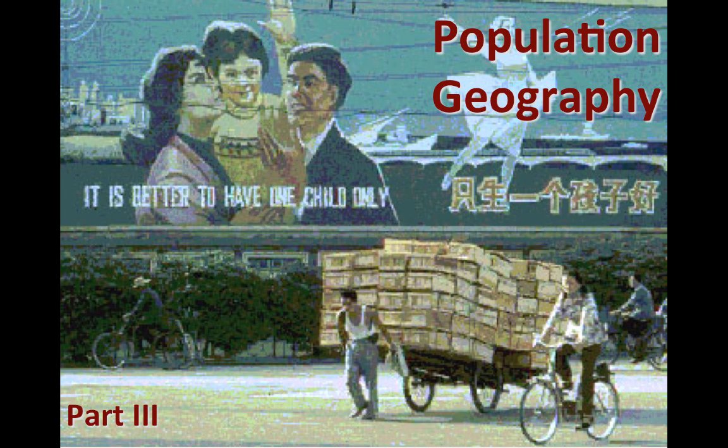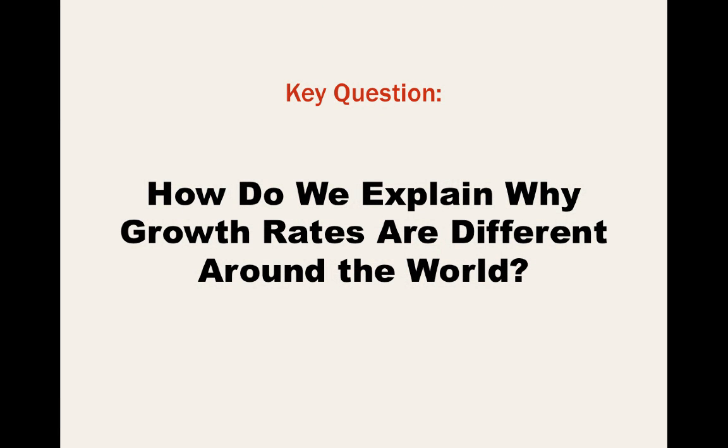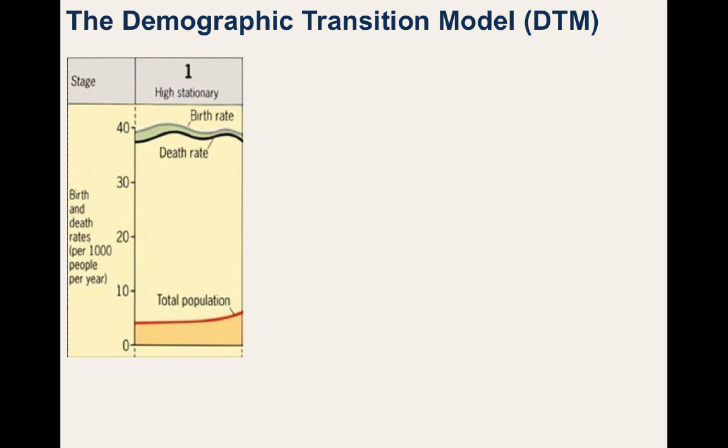Welcome to Population Geography Part 3. In this video, we're going to look into how we explain why growth rates are different around the world. We'll investigate one of the most essential studies in analyzing birth and death rates across time and across the globe, and this is the Demographic Transition Model, the DTM.